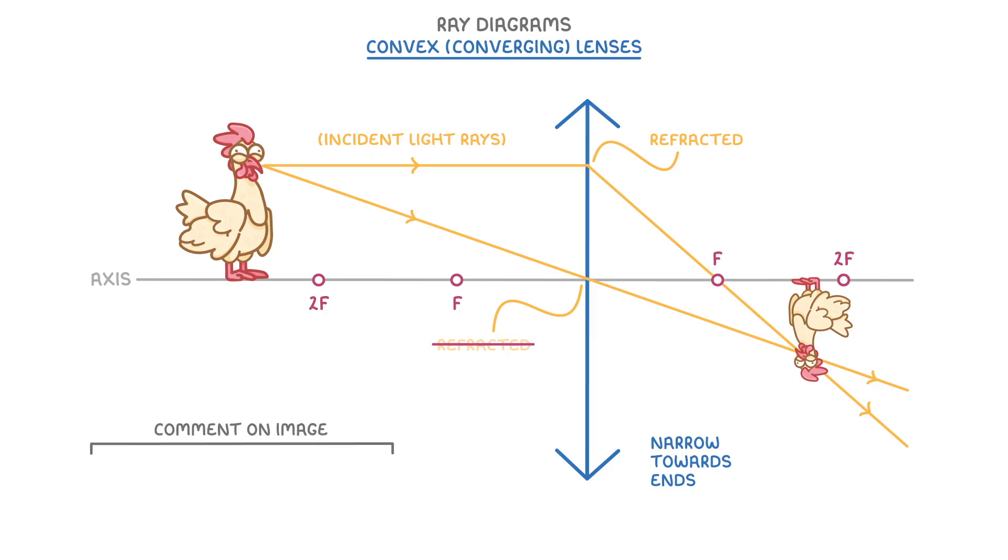Again, you'll likely need to comment on the image. In this case, the image is real, because these rays are both real. It's inverted, which just means upside down. And it's smaller than the object.